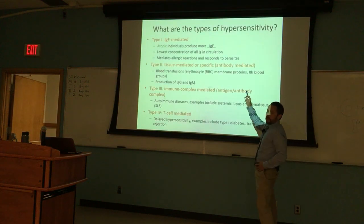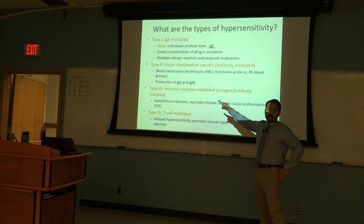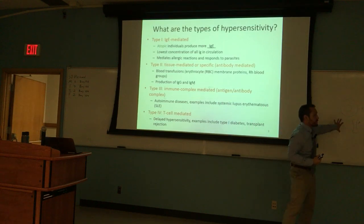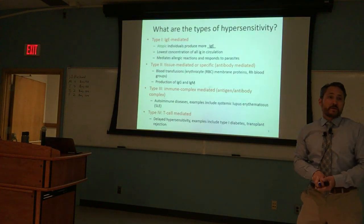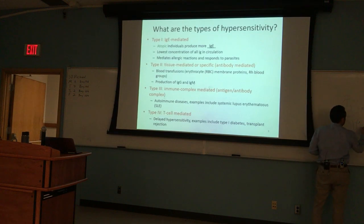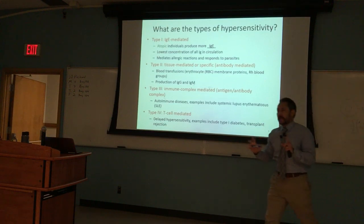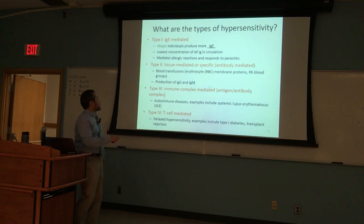If you have type A blood, can you receive blood from a type B patient? What happens? Antibodies will be produced — it's actually a type 2 hypersensitivity. You already knew about this; they just didn't call it type 2 in 202. The other one is the RH complex — you're either RH positive or RH negative.